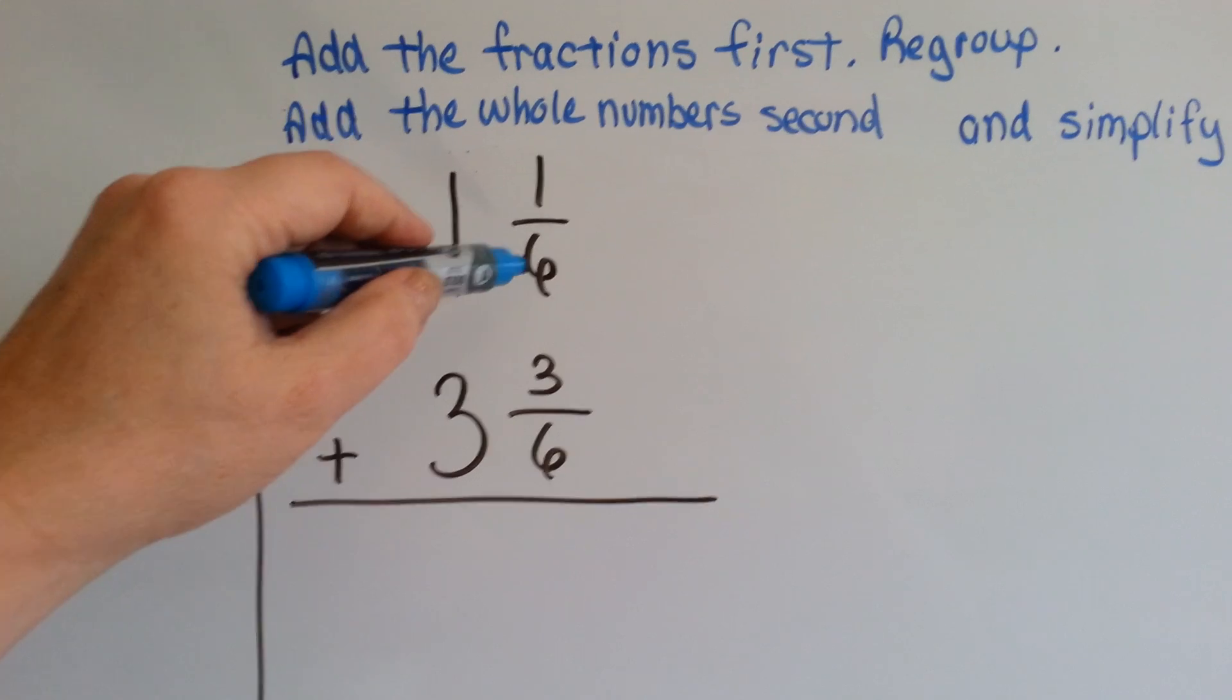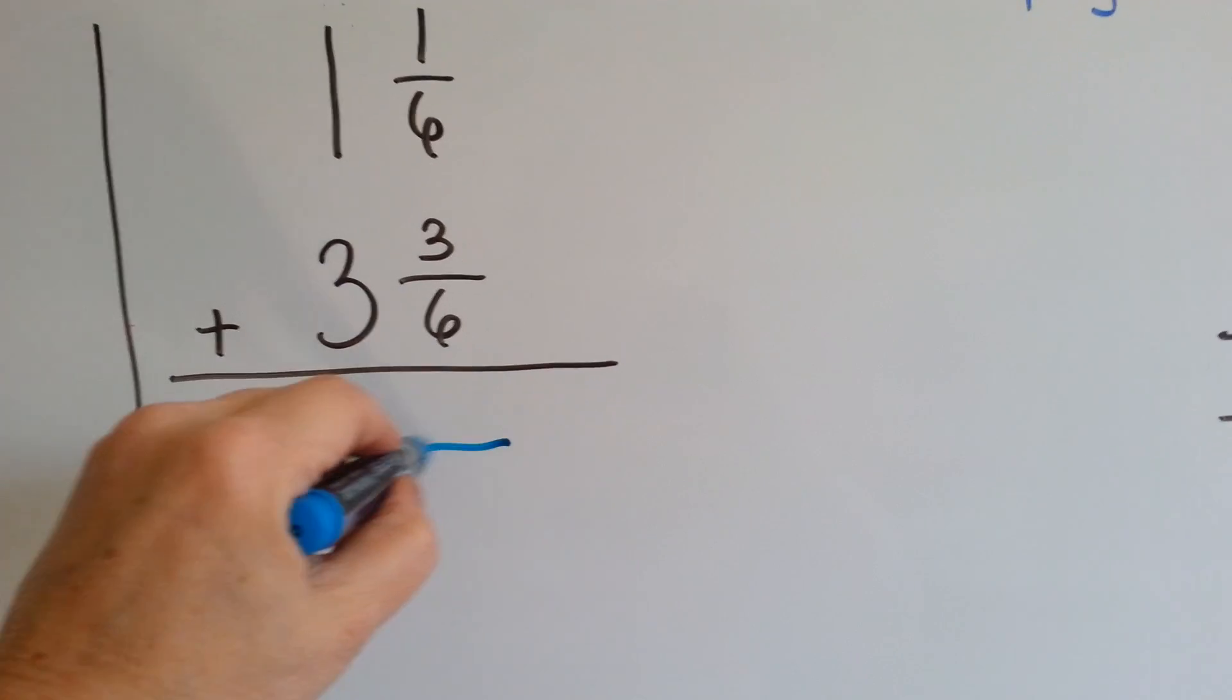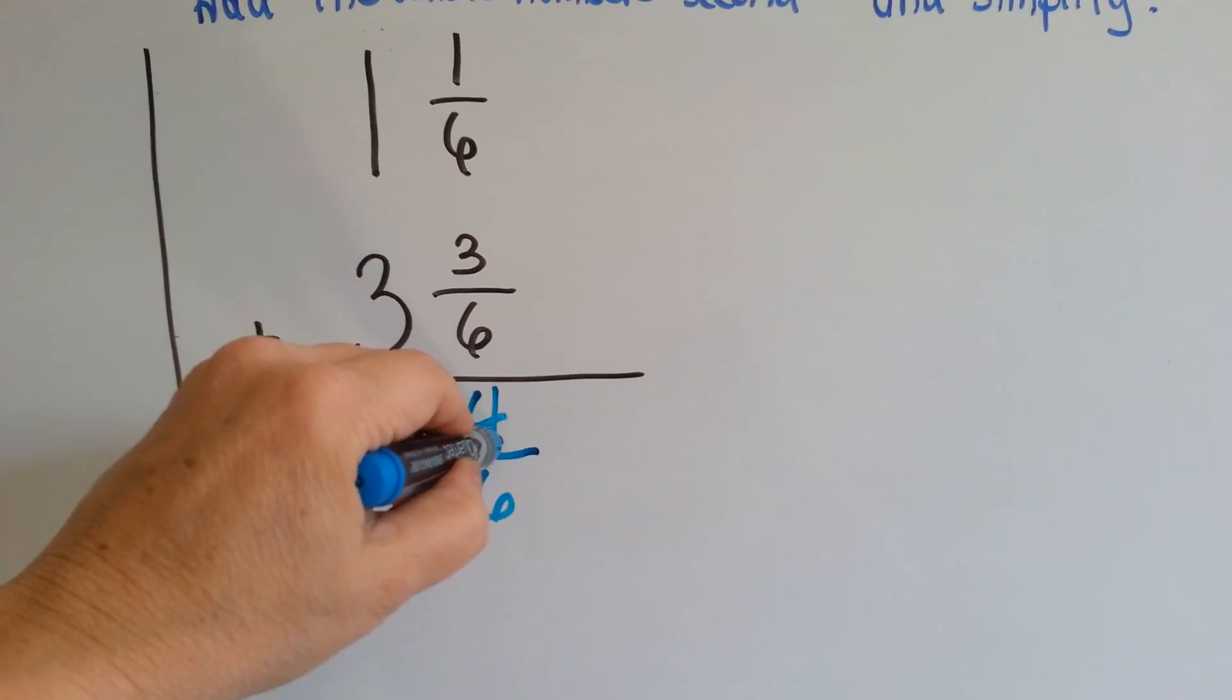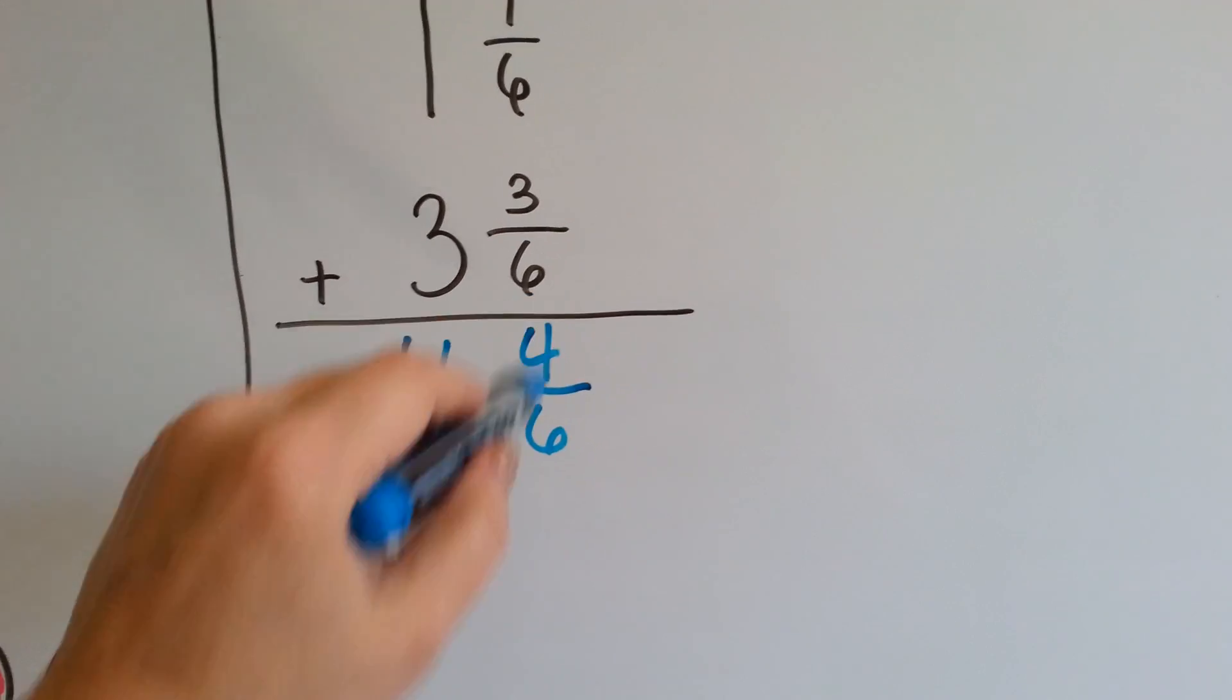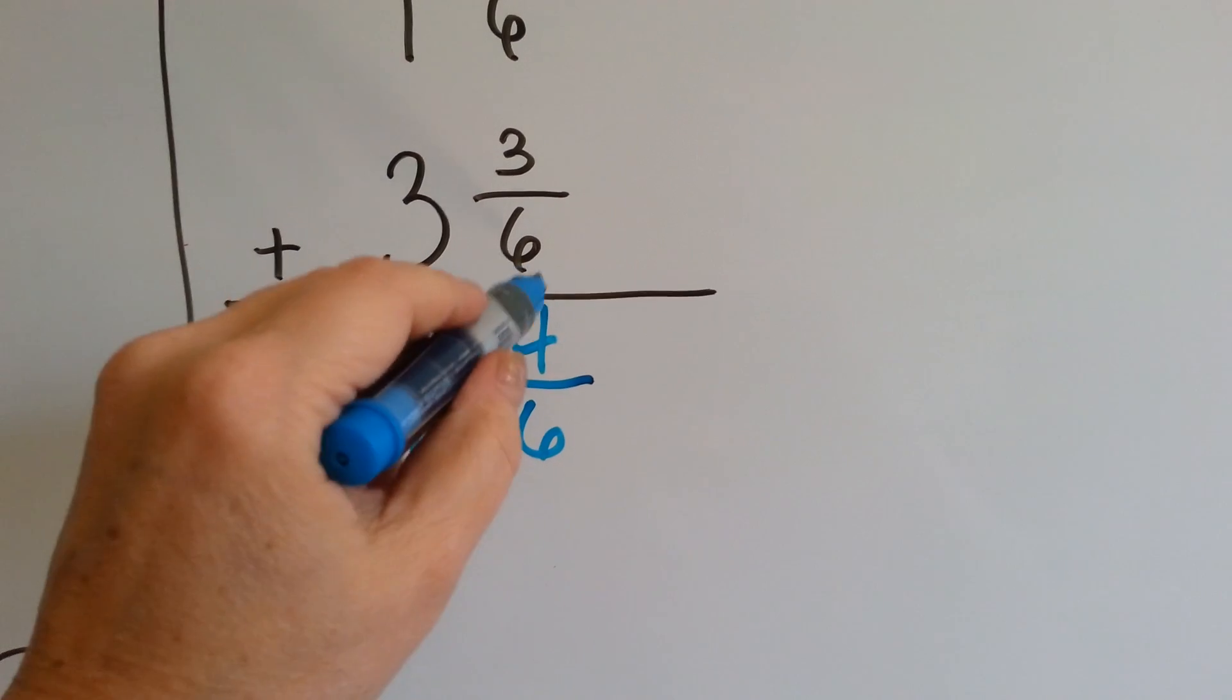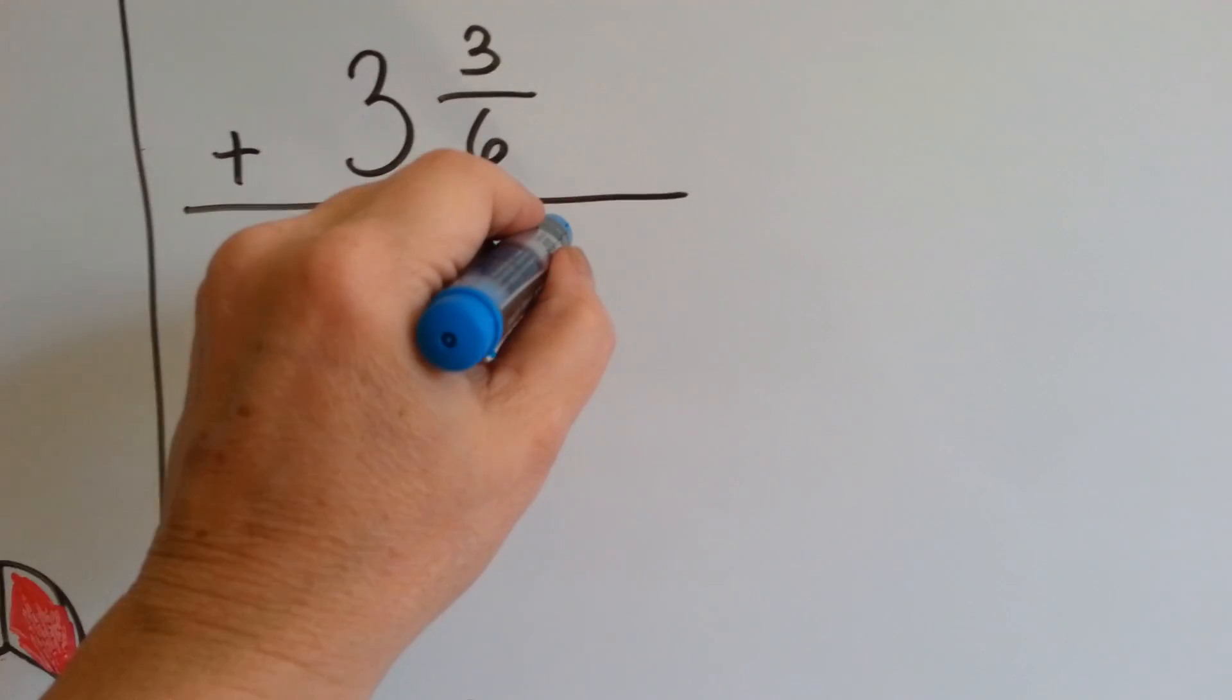If we have 1/6 and we want to add 3/6, how many sixths would we have? 1 and 3 is 4. We have 4 and 4/6. Now, this 4/6 can be simplified, can't it? What factor can go into both 4 and 6? How about a 2?